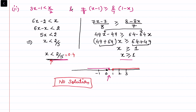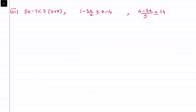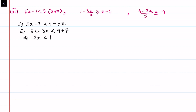Now for the third question, there are three inequalities given and we want to solve the system. Solving individually: the first is 5x minus 7 less than 9 plus 3x, giving 5x minus 3x less than 9 plus 7, so 2x less than 16, and therefore x less than 8.